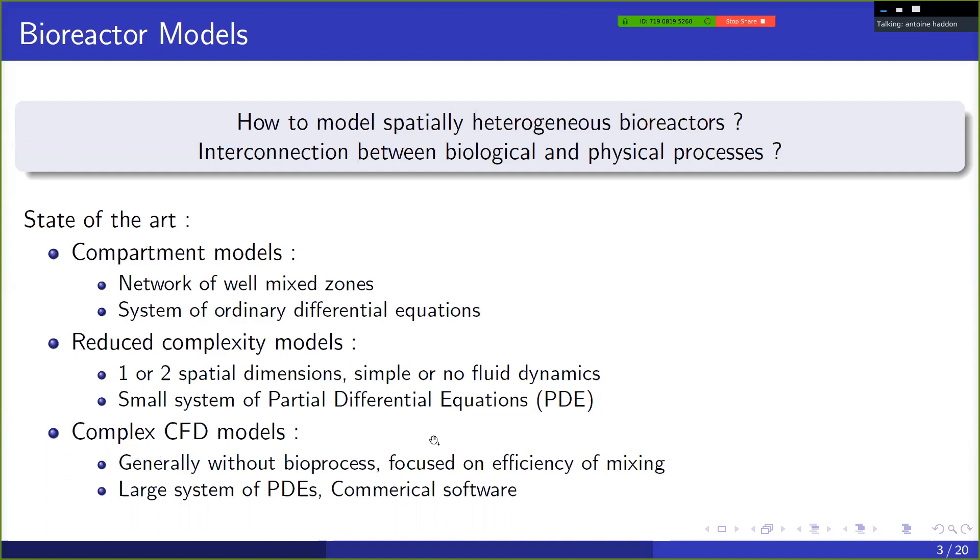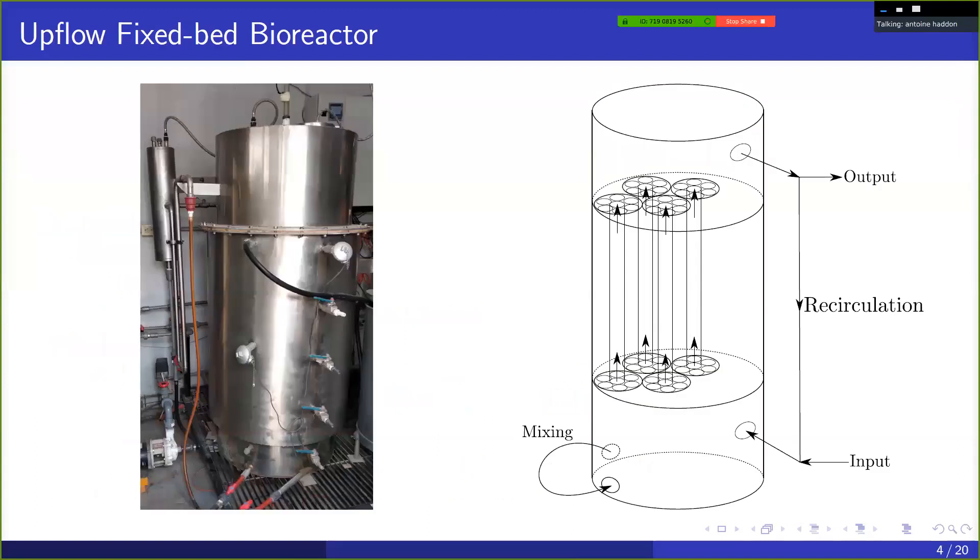And so the work I'm going to present here is a bit of a bridge, bridging the gap in between these two families of models, really trying to develop a model that's not too complex that we can still consider using it for optimization problems, for instance, but that still represents the geometry accurately, namely a three-dimensional model. So for this, we've modeled an upflow fixed bed reactor. So this is a reactor operated in Mexico.